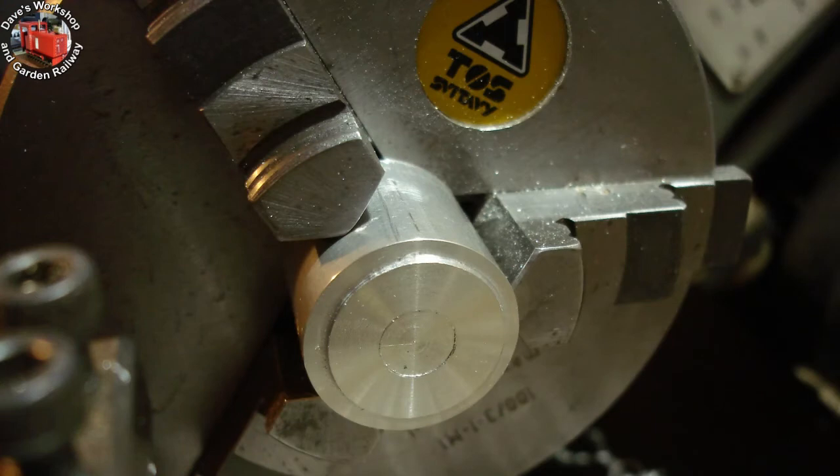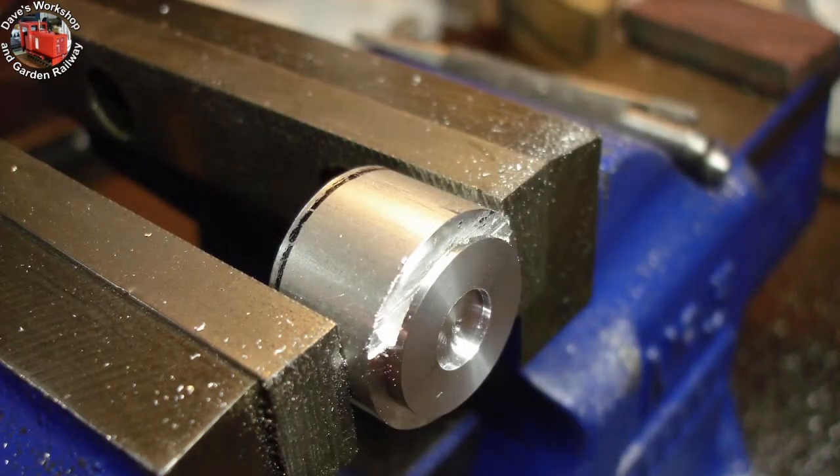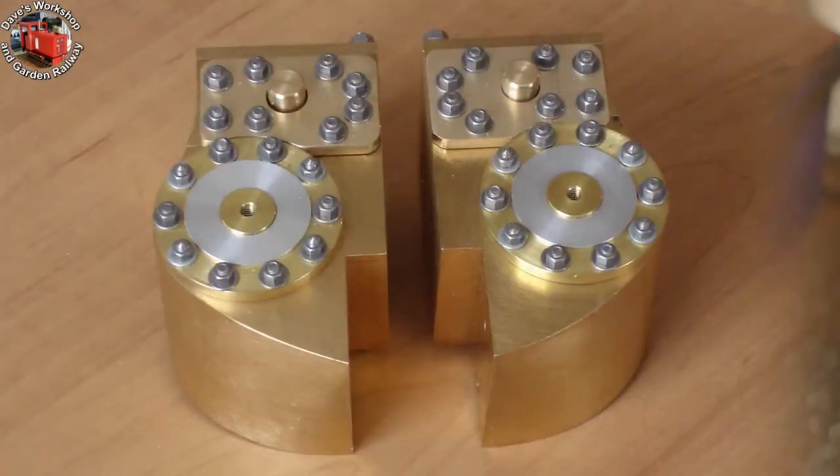Decorative aluminium cover for the front cylinder covers. Halfway through sawing it off. Afterwards it was super glued to a faceplate and skimmed to thickness, 20 thou. Here are the cylinders with all the decorative studs. Only 6 do any securing.